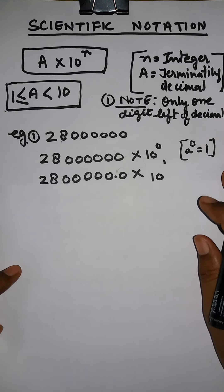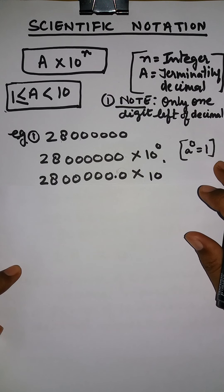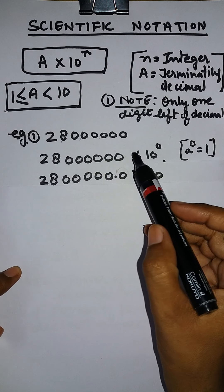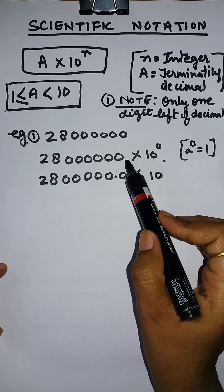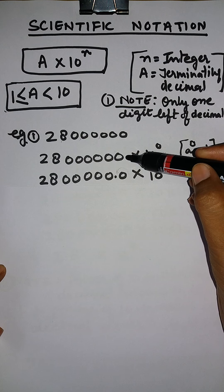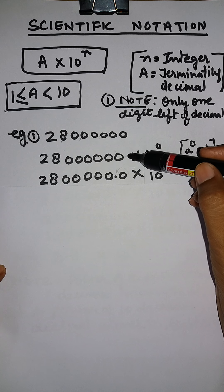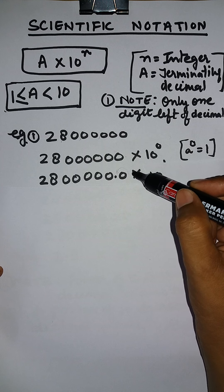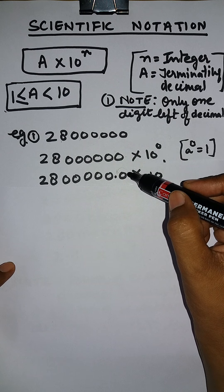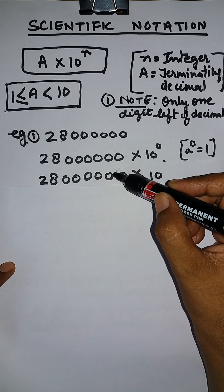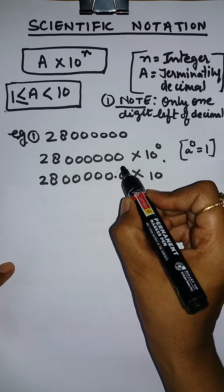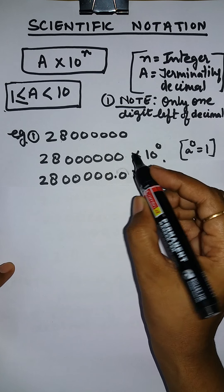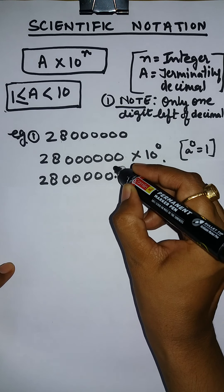What we have to do here: we know that there is no decimal shown in this number, which means the decimal is at the extreme right side. So the decimal here has to be shifted to the left side — this decimal will be shifted from right to left, one step.